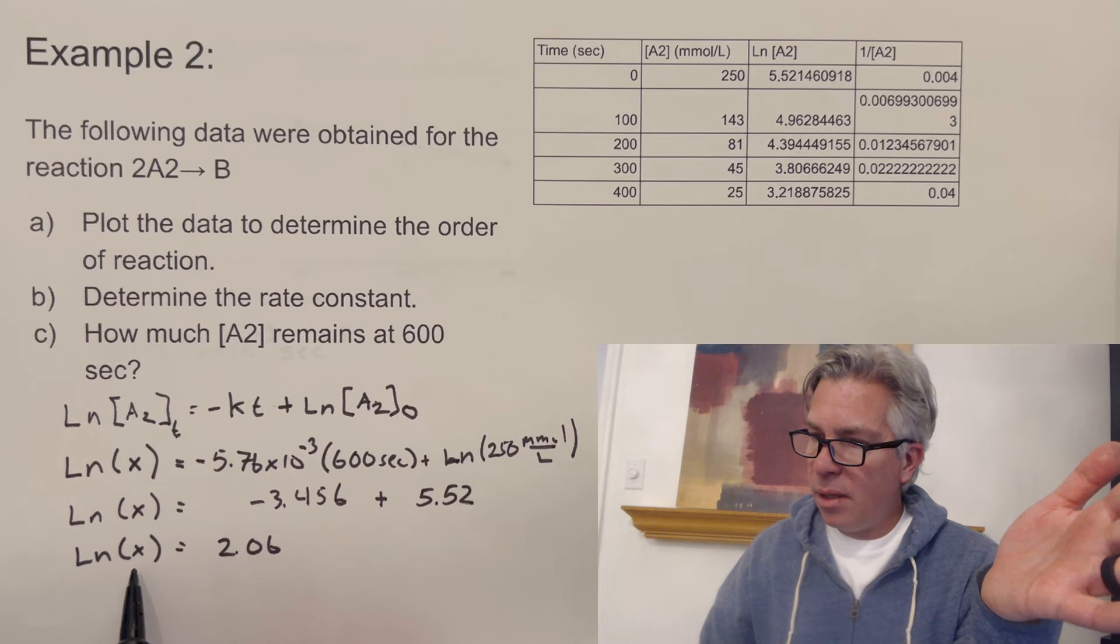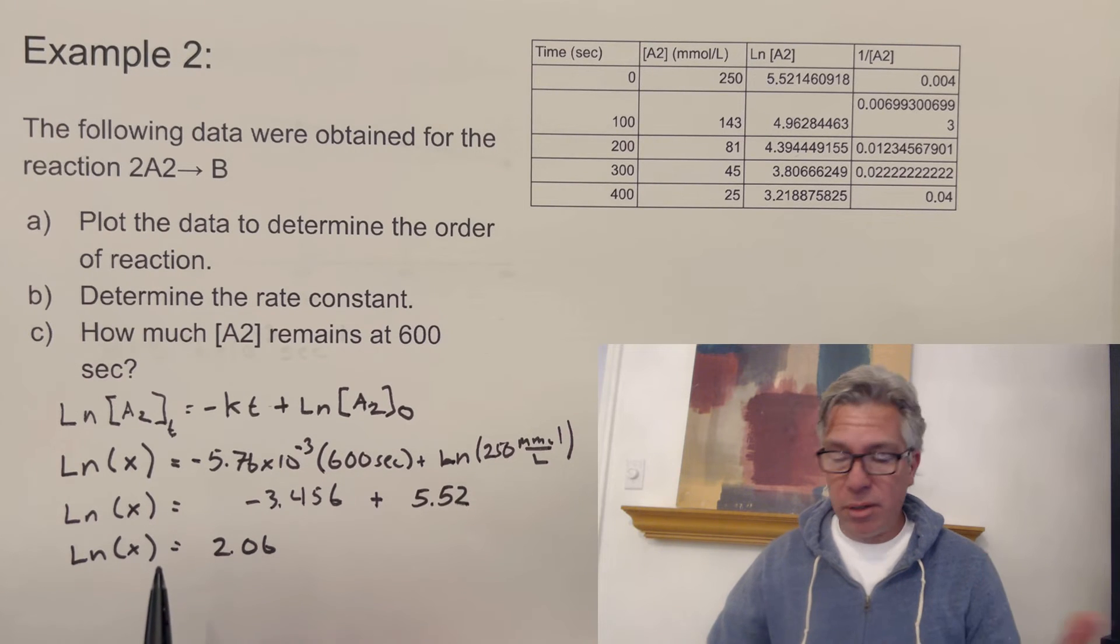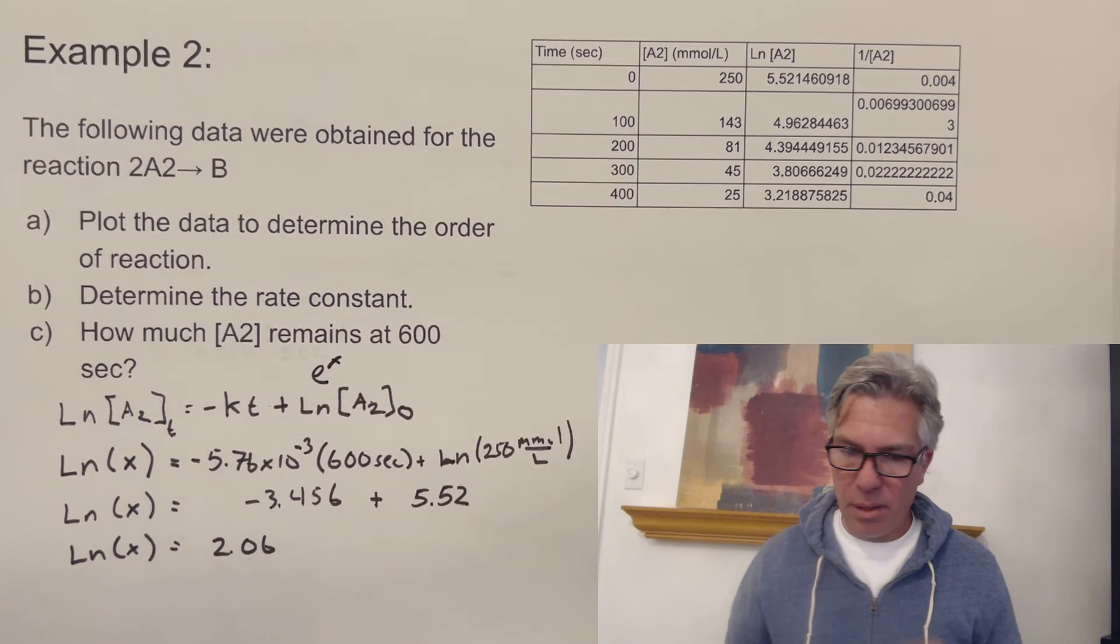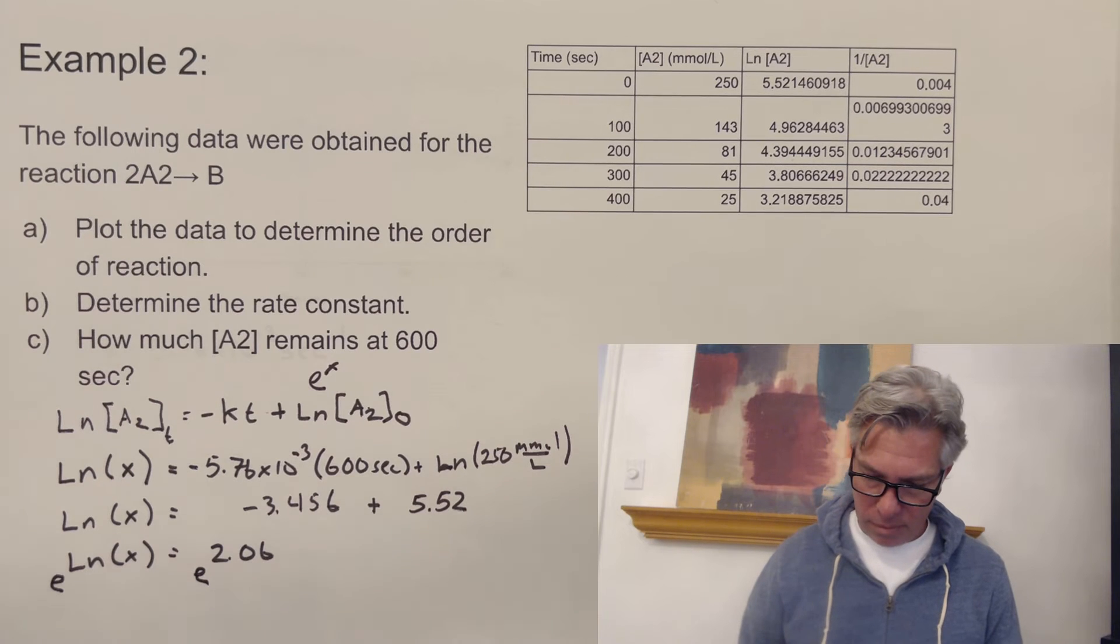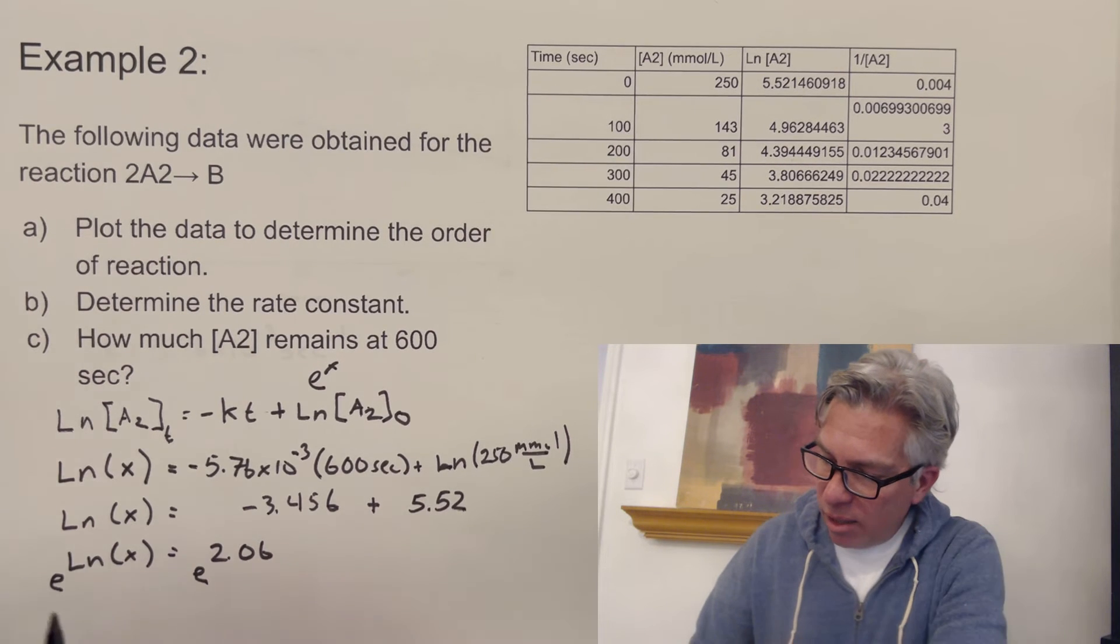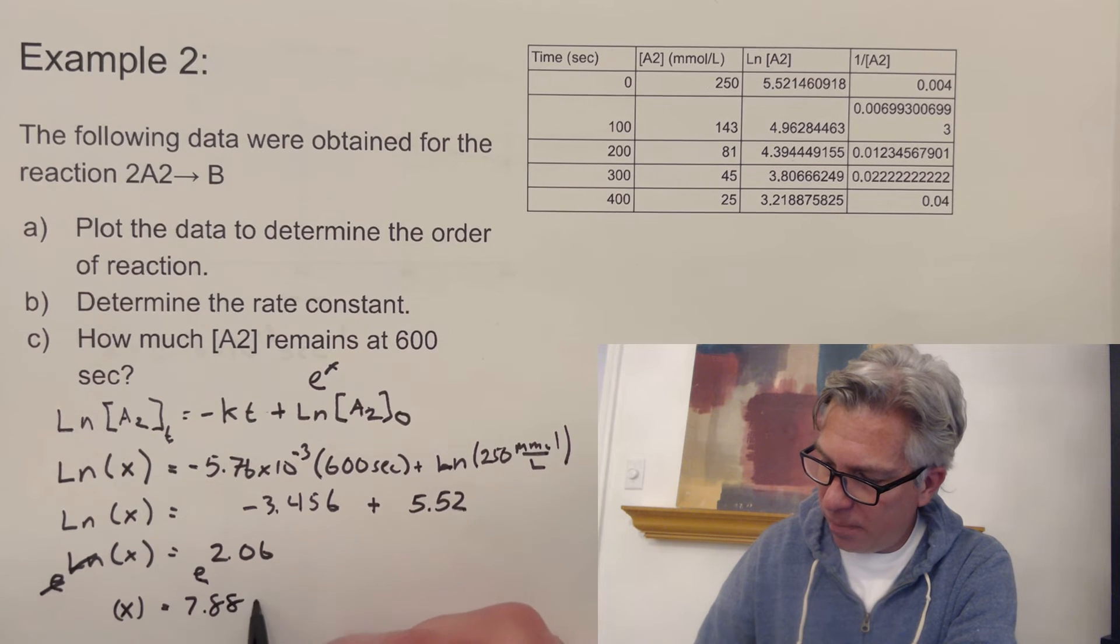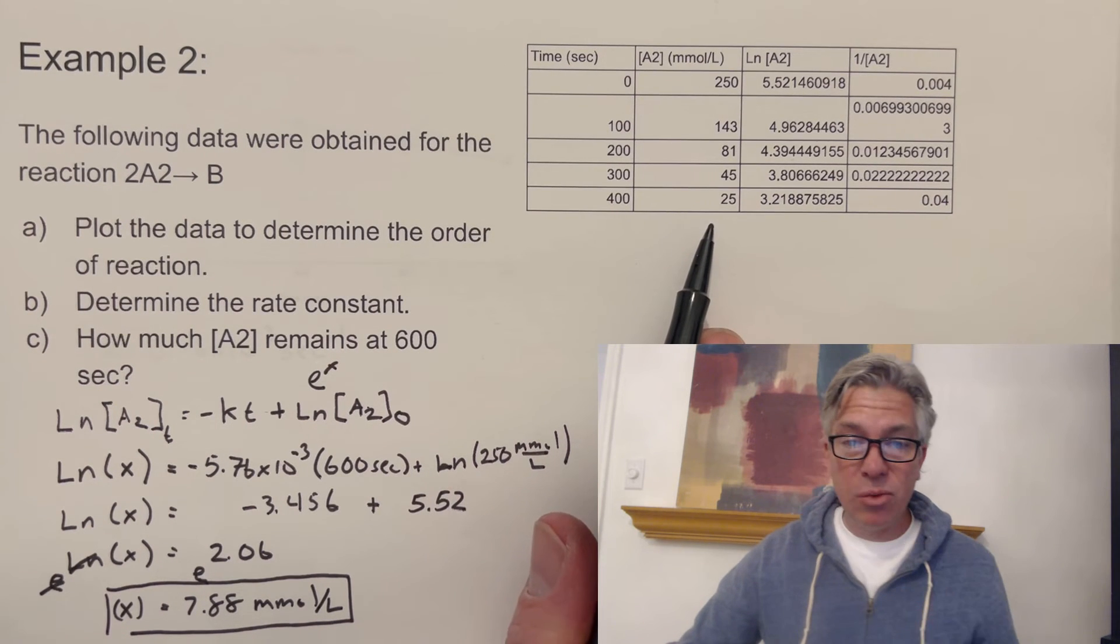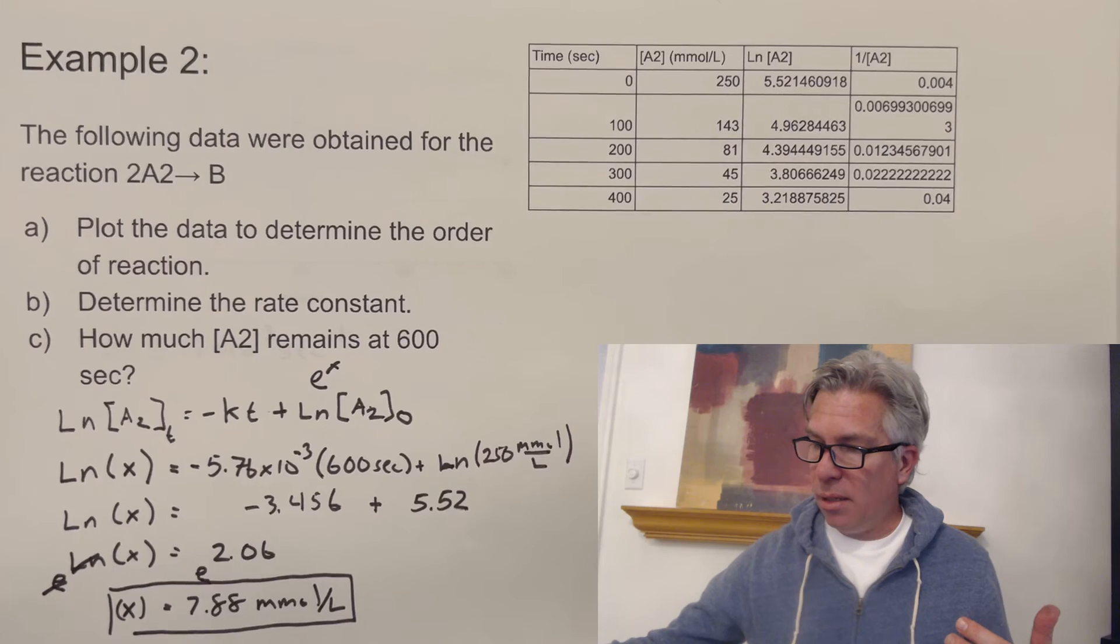Now you might have a question. How do I get X by itself when you have a natural log function in there? You may have covered this in math class before. But if you haven't, what you need to do is find the E to the X button. And E is the other side of the natural log. So what you're going to do is basically take E raised to both sides. And so E to the ln of X actually cancels out the ln and then E to the 2.06. So then X equals 7.88 millimoles per liter. And that is something below 25, significantly below 25. And that's great. It makes sense. That's the does this make sense test. And I believe it does.